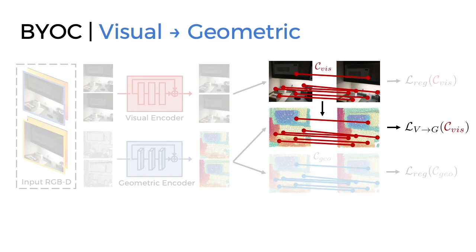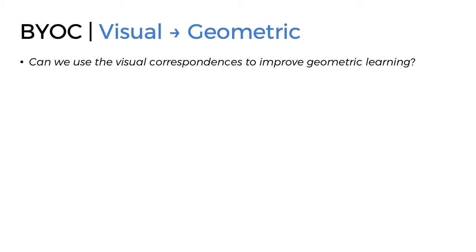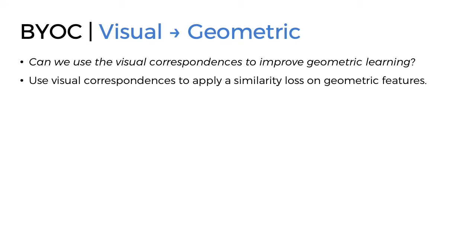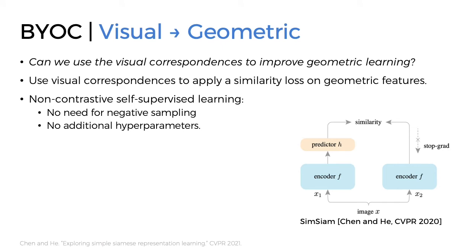Finally, we consider using visual correspondences to improve geometric feature learning. Since visual correspondences are more accurate, we use the sampled visual correspondences to apply a similarity loss on geometric features. However, we find that simply minimizing the distance results in worse performance. We instead use the non-contrastive self-supervised approach proposed by Chen and He. The main benefits of this approach are that it doesn't require negative sampling, nor does it add any extra hyperparameters. This is important since while visual correspondences provide good positive pairs, it's unclear how one would effectively sample negative pairs in our setting.